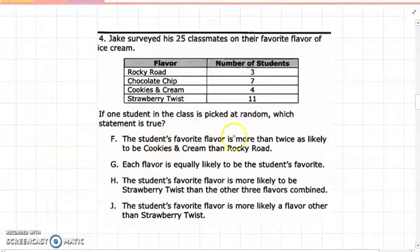It says the student's favorite flavor is more likely, more than twice—twice means two times or double—as likely to be Cookies and Cream than Rocky Road. So Cookies and Cream, let me look at Cookies and Cream. Here we have Cookies and Cream is four, Rocky Road is three. So if you think four is double, more than double? Basically, make sure it says each flavor is equally likely to be the student's favorite. That means that all these have the same chance.